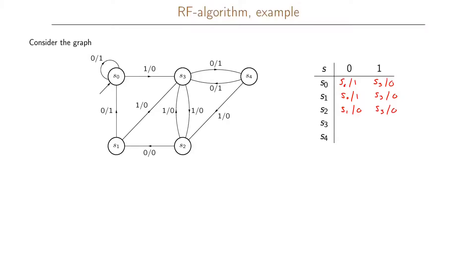For S3: with input 0 we go to state S4 and output 1; with input 1 we go to state S2 and output 0.